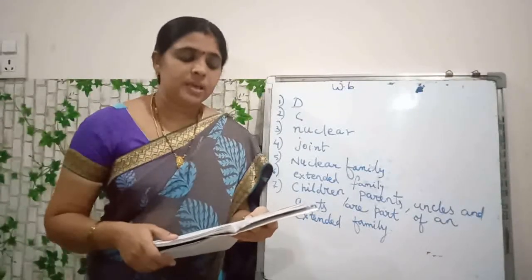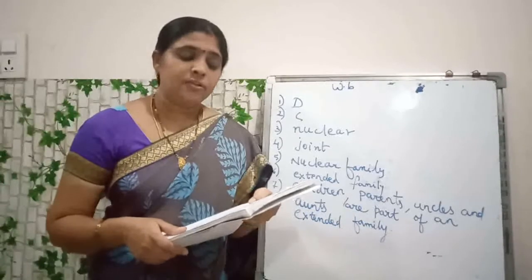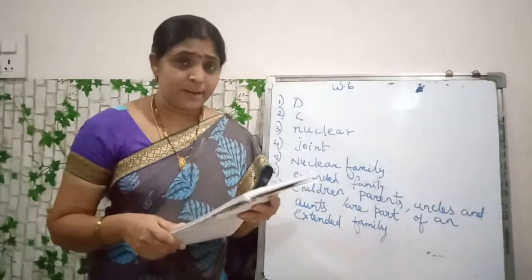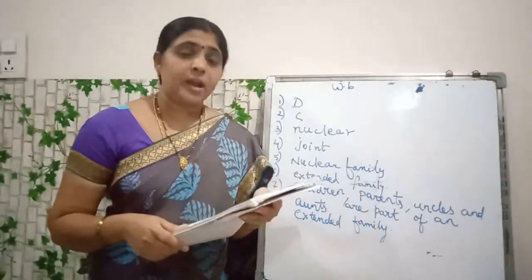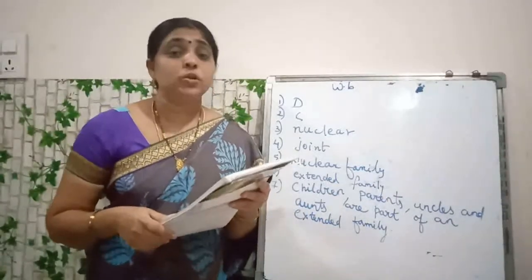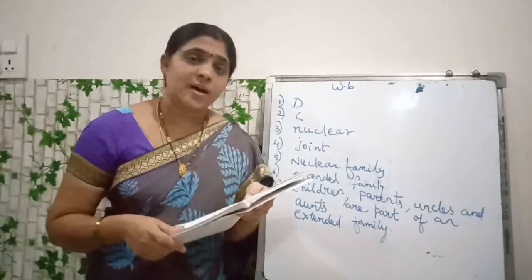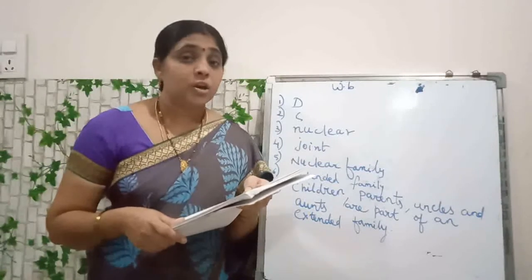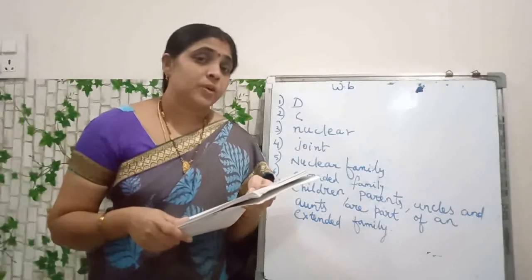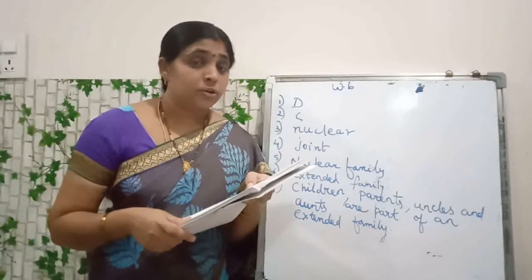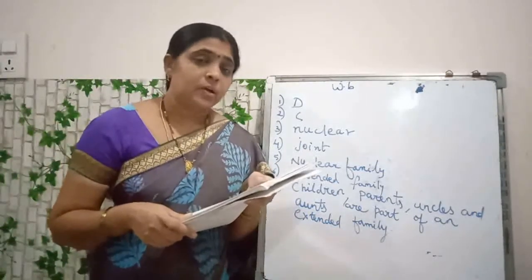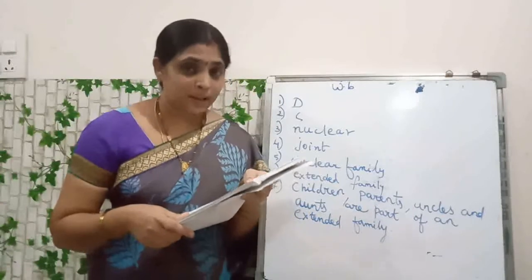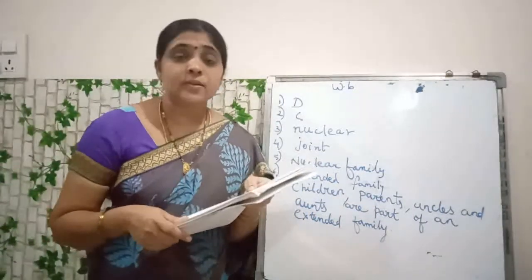Which member is not a part of a nuclear family? Mother, father, children, grandparent. Nuclear means only children and parents — that is father and mother. So who is the member who is not a part of a nuclear family? Grandparent. D is the answer.